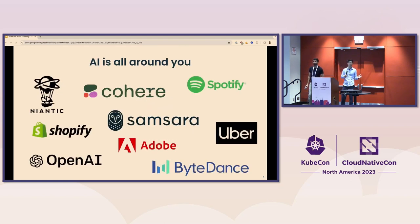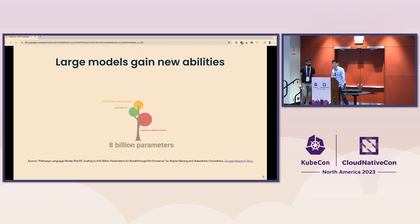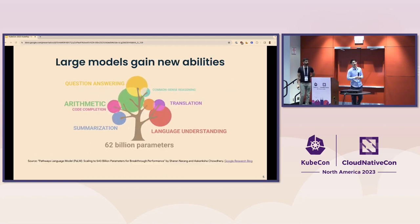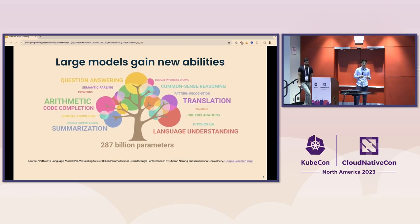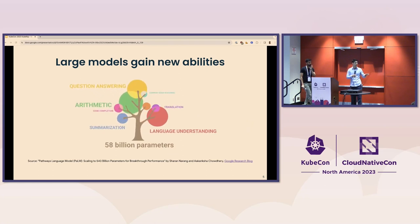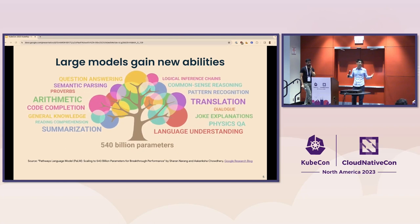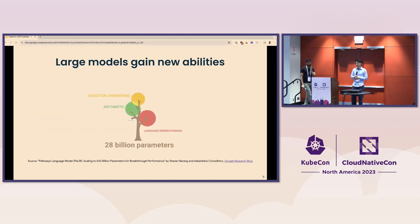Who here took an Uber this week, listened to Spotify, or bought something online? AI is around us everywhere. You are interacting with machine learning models every day, and those machine learning models were built using Ray. We're just getting started. These models are getting larger and larger, and as they get larger they are now demonstrating human-level capabilities, opening up completely new opportunities to apply ML in everyday tasks.